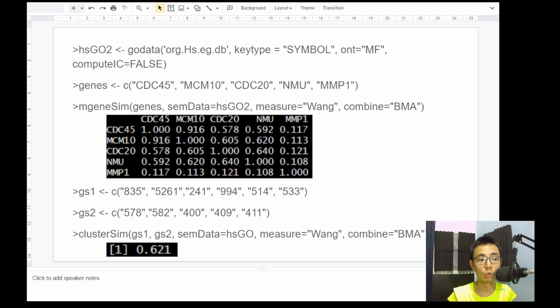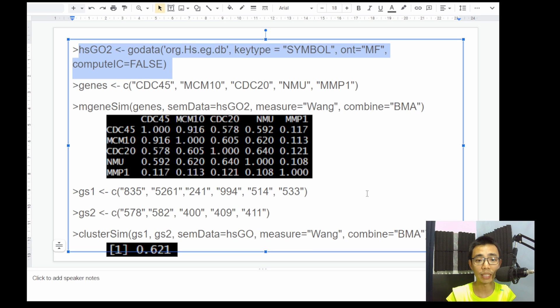And of course, if you do want to have a little bit more control in terms of the genes, you can also run this, which is CDC14A, MCM10, CDC20, NMU, MMP1, and you just specify a slightly different database over here. And then you can do a mgoSim on one, and you can do mgeneSim. And again, it will give you a semantic similarity between each of the genes as a completely different matrix.